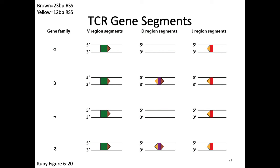Looking at the V's, D's, and J's for alpha, beta, gamma, and delta: delta is the heavy chain because it has V's, D's, and J's, while gamma is the light chain. Since heavy chains rearrange before light chains, delta rearranges before gamma - just like in B-cells. Alpha and delta are on the same chromosome - chromosome 14 in both humans and mice. This consistent co-location across organisms is an important biological feature.